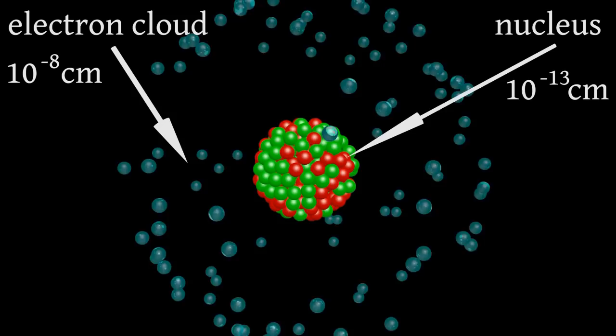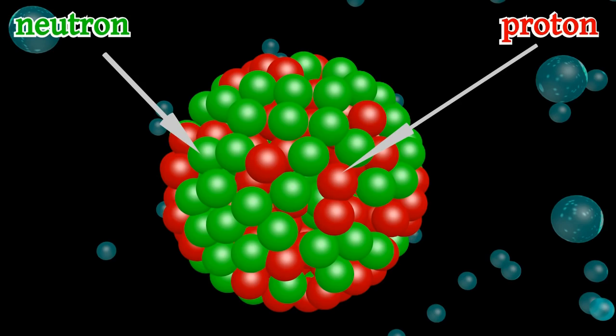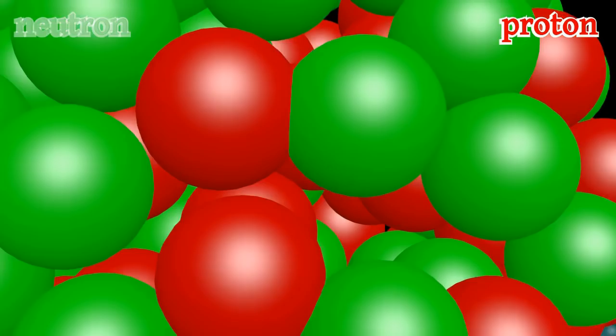The nucleus is about ten to the power of minus 30 centimeters in size. What is the structure of the nucleus? In general, the nucleus consists of a number of protons and neutrons. In the most simple case — the hydrogen atom — the nucleus consists of one proton. So we can ask: what is the structure of the proton?